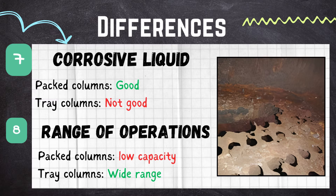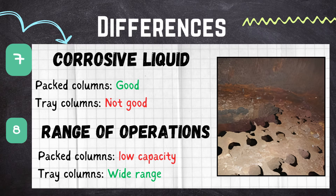The next difference is corrosive liquid handling. Packed columns can handle corrosive liquids more easily compared to tray columns because the packing materials are mostly made of anti-corrosive materials such as plastics, FRP, or PPS. Tray columns are not good for corrosive liquids because the plates and trays are more prone to corrosion when handling corrosive liquids.